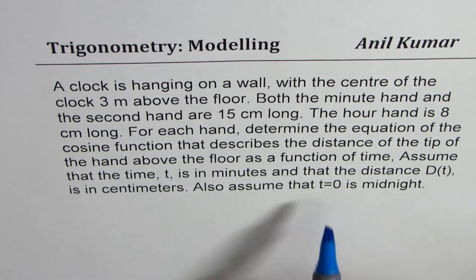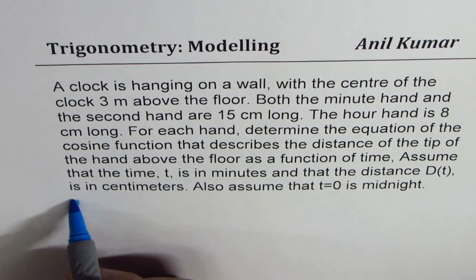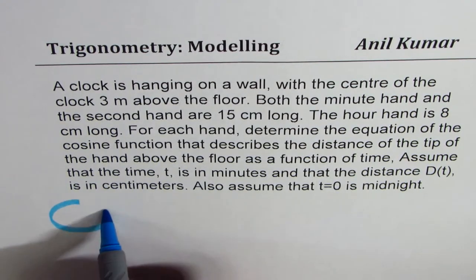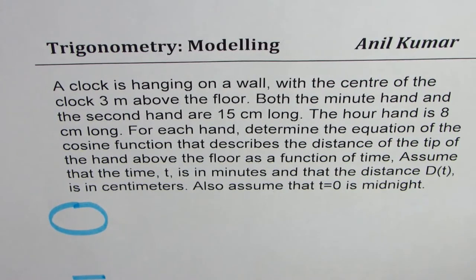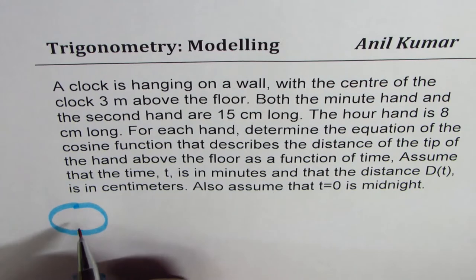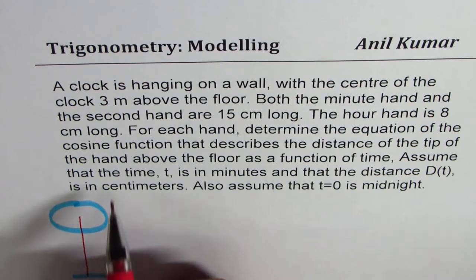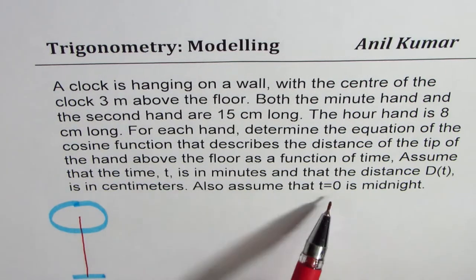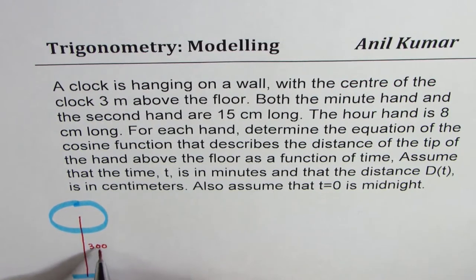Assume that the time t is in minutes and that distance d of t is in centimeters. Also assume that t equals 0 at midnight. So let's sketch the scenario. We have a clock here and let's say that's the ground. What we are given here is that the clock center is 3 meters. Since we are talking about centimeters, I will write here 300 centimeters.